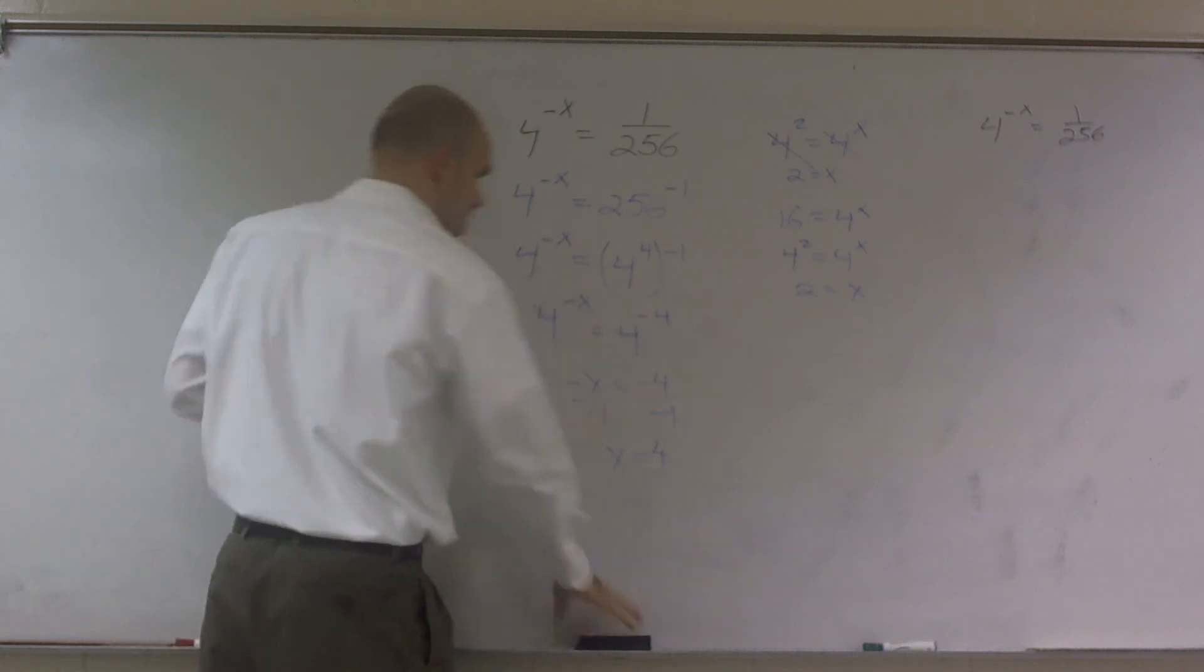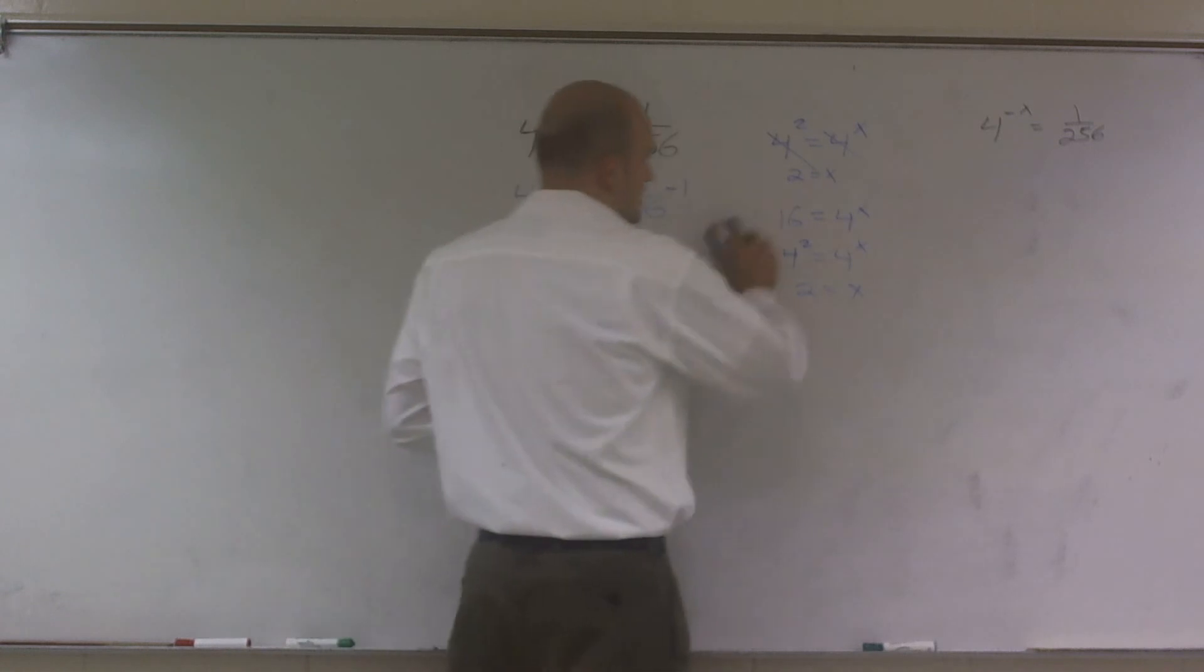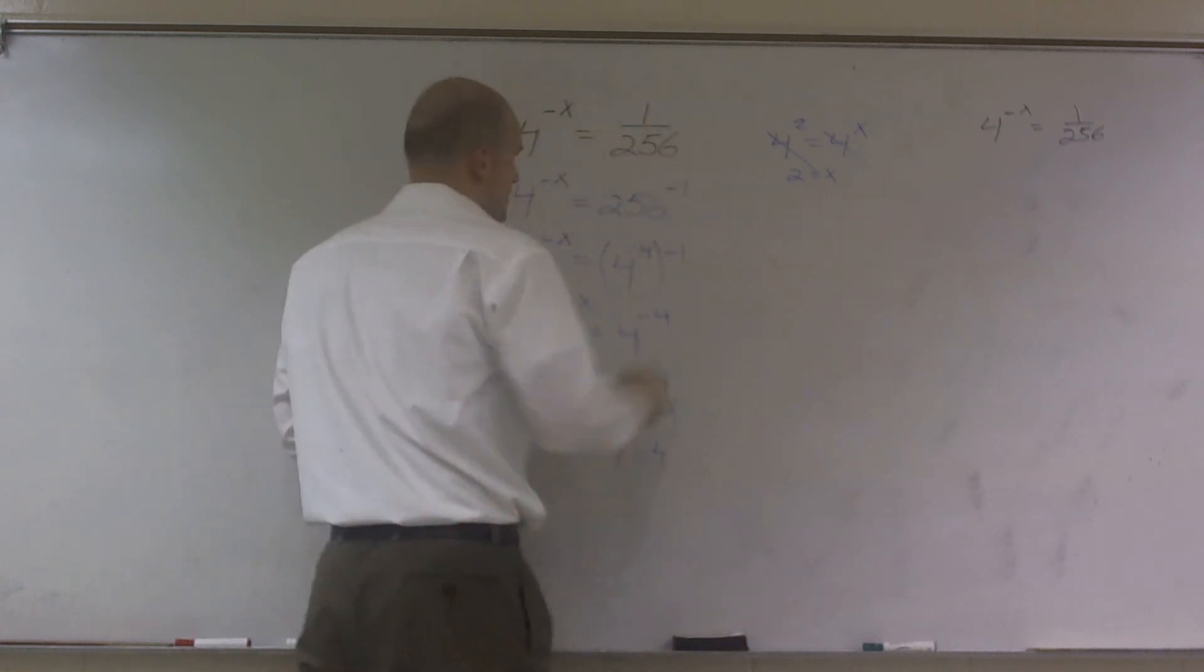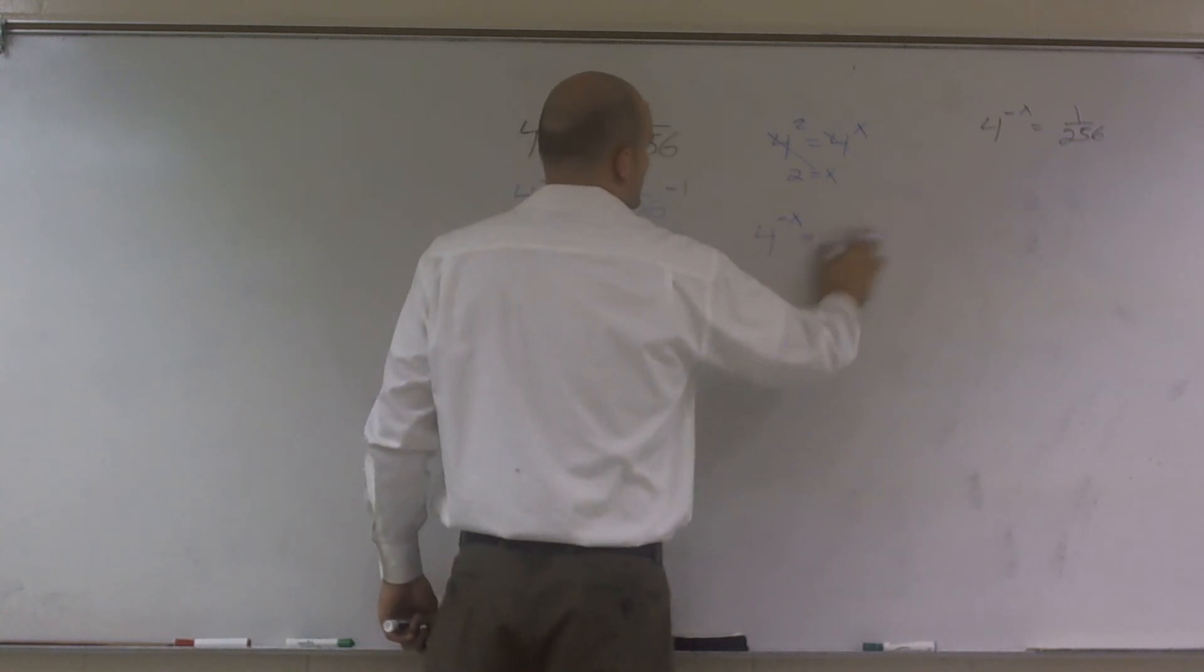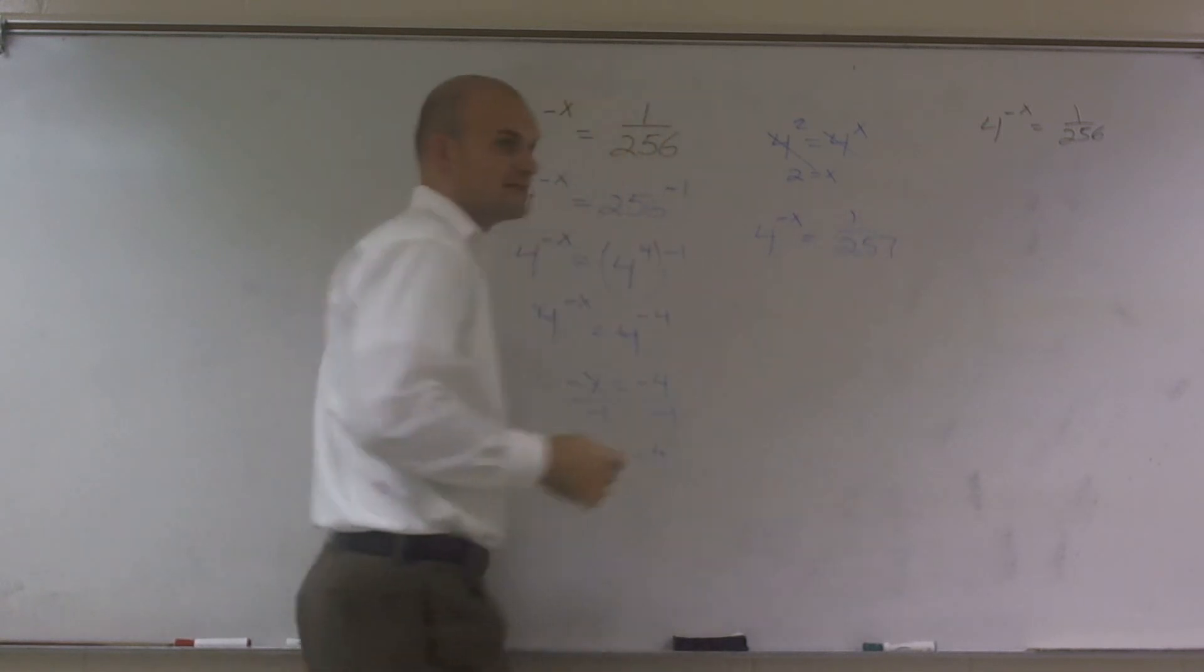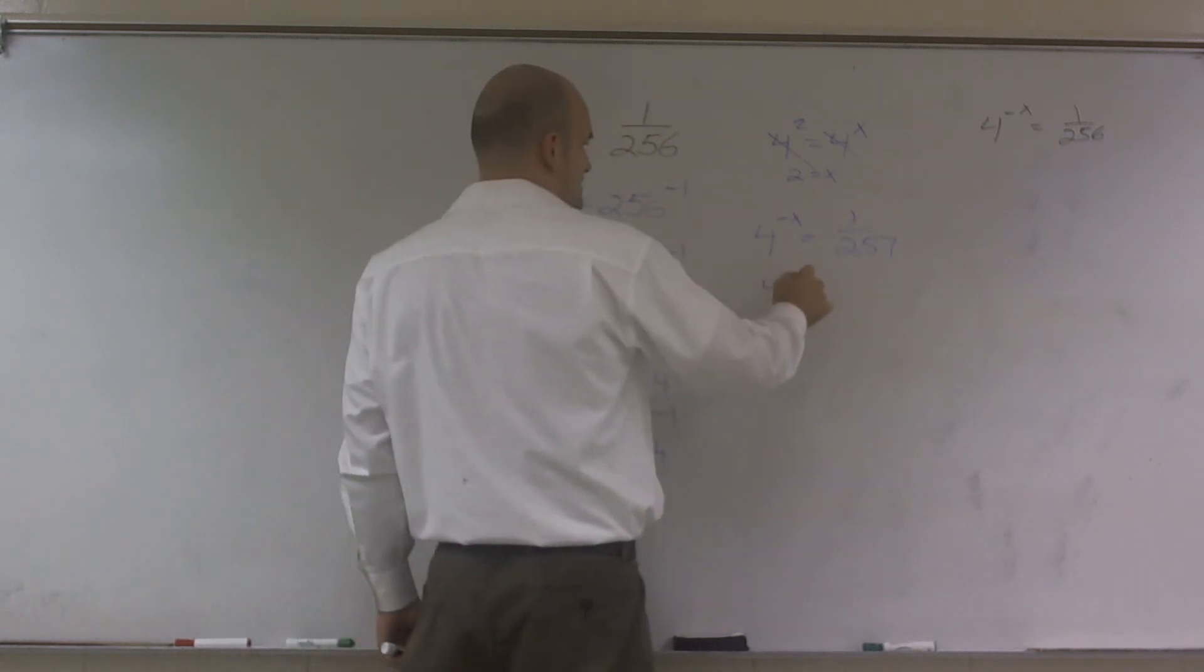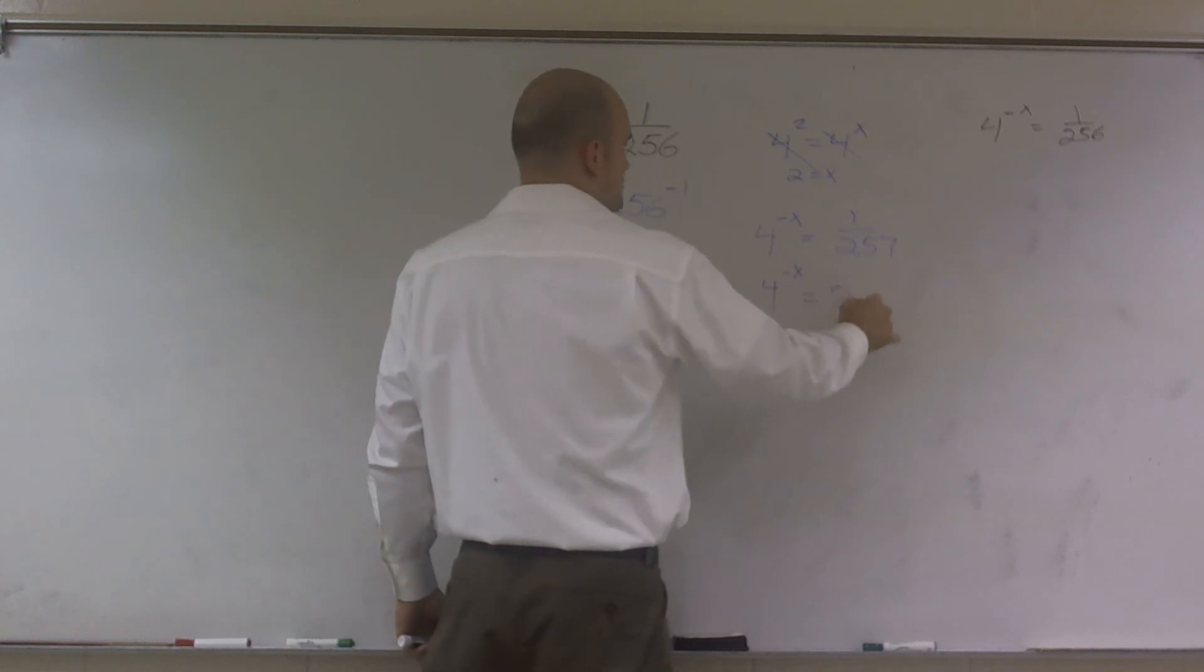Now let's pretend, let's just do another problem right now, just so you guys see what if they weren't the same. What if you had 4 to negative x equals 1 over 257? I would still kind of follow the same rules. I would write 257 to the negative first power.